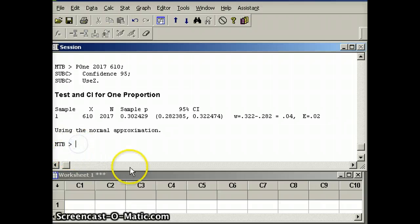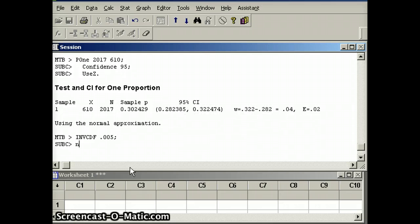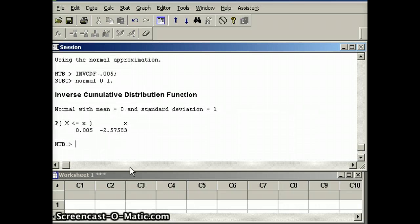So I'm going to say INVCDF 0.005, semicolon of Z distribution, which is normal 0.01. And what does it give me? Negative 2.576. And again, we usually use the positive version, which would be 0.975 or 2.576. That will be our Z-alpha by 2.